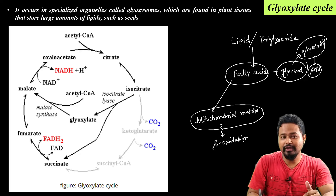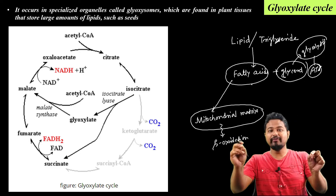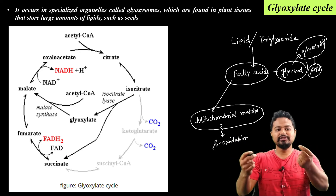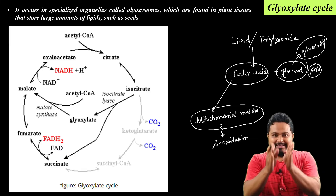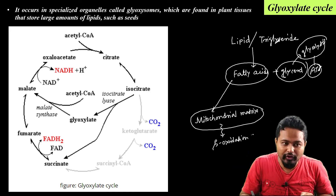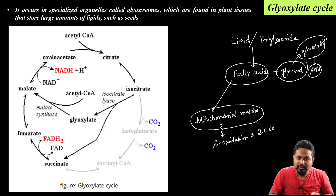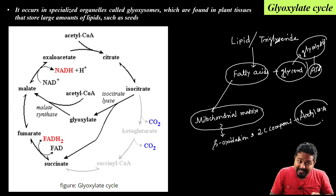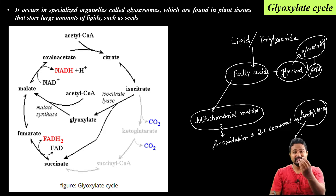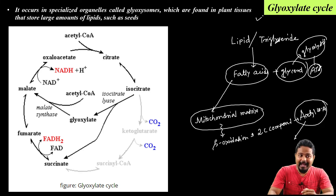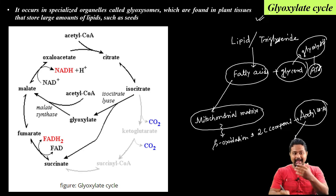In the mitochondrial matrix, beta-oxidation occurs. The long fatty acid chains are sequentially converted into 2-carbon compounds called acetyl-CoA. This acetyl-CoA is the starting substrate for the glyoxylate cycle.